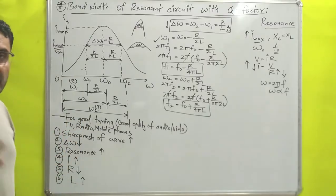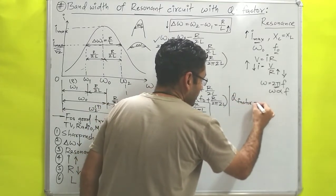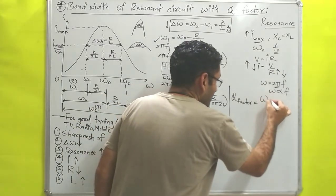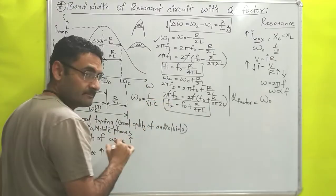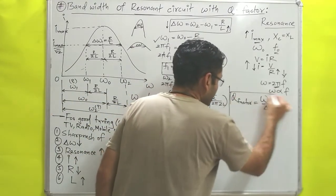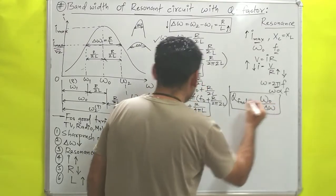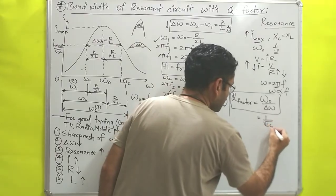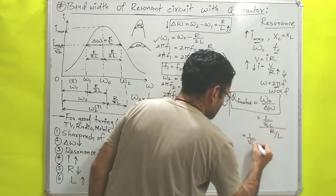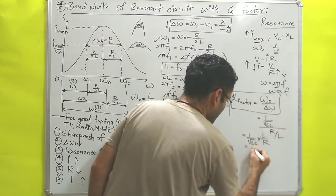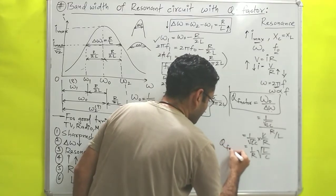The same idea can be understood with the help of Q factor. Q factor is the ratio of the angular resonant frequency omega naught — which equals 1/root(LC) — to the bandwidth delta omega. So Q = omega naught / delta omega = (1/root(LC)) / (R/L) = (1/R) × root(L/C). That is the value of Q factor, and that equation you must remember.